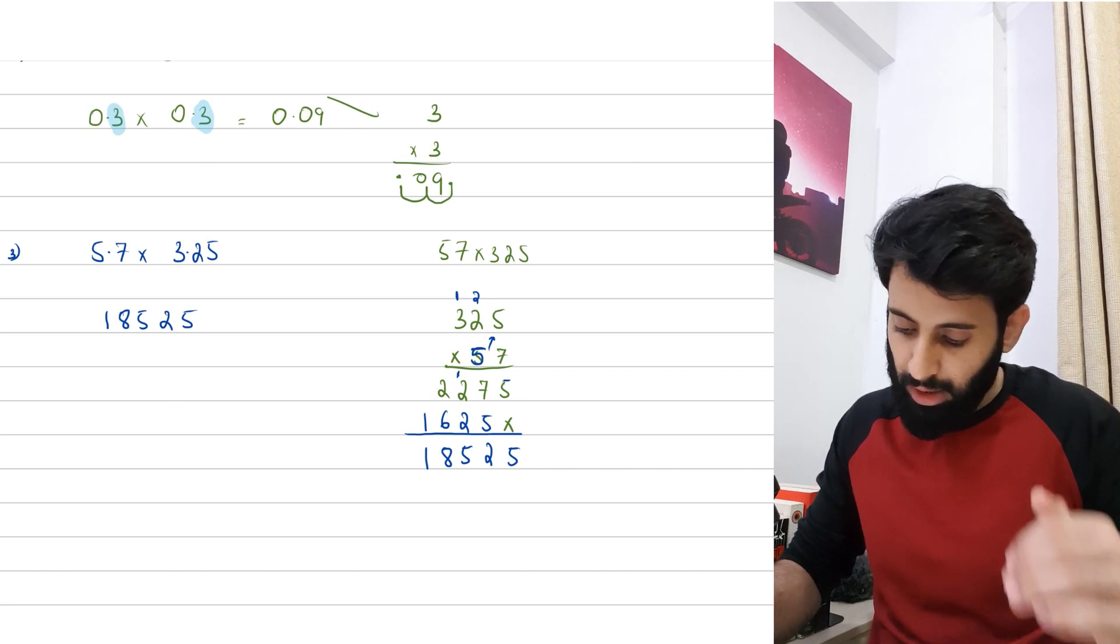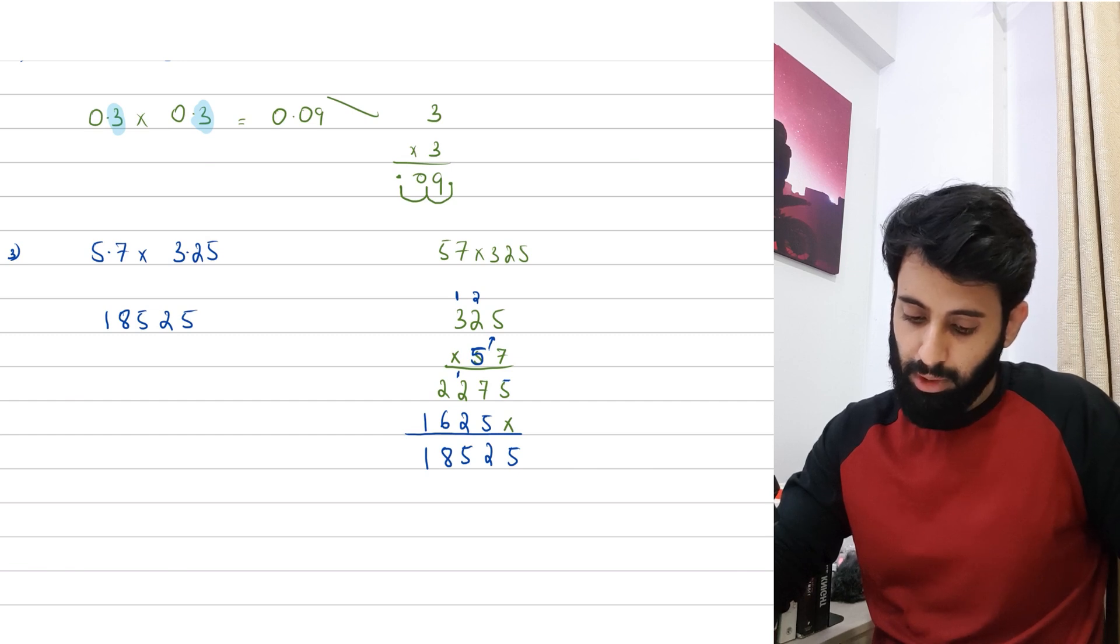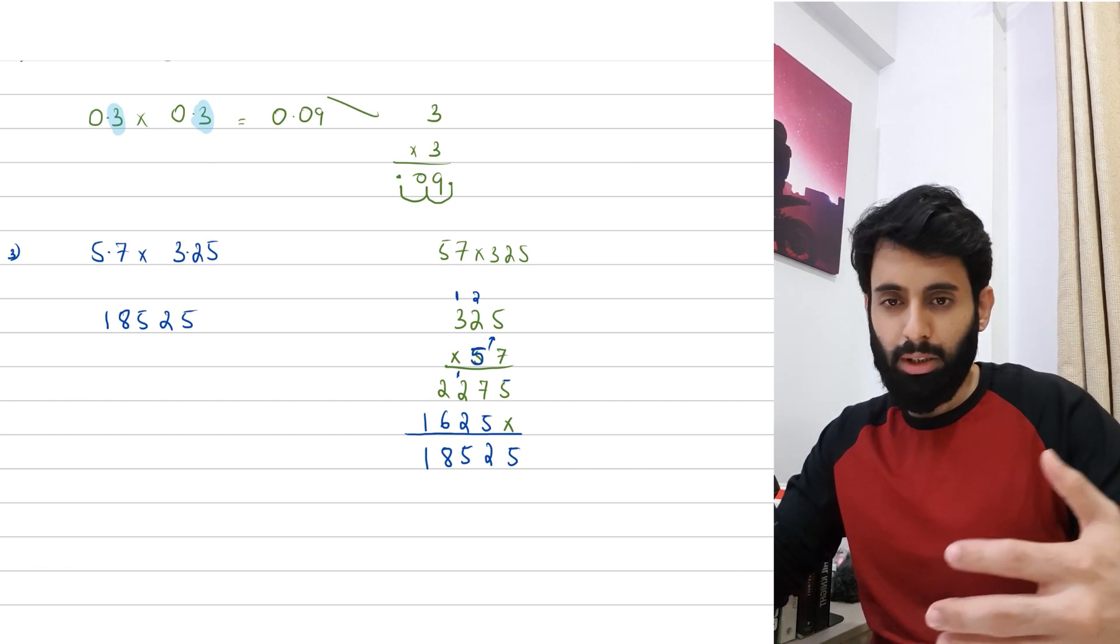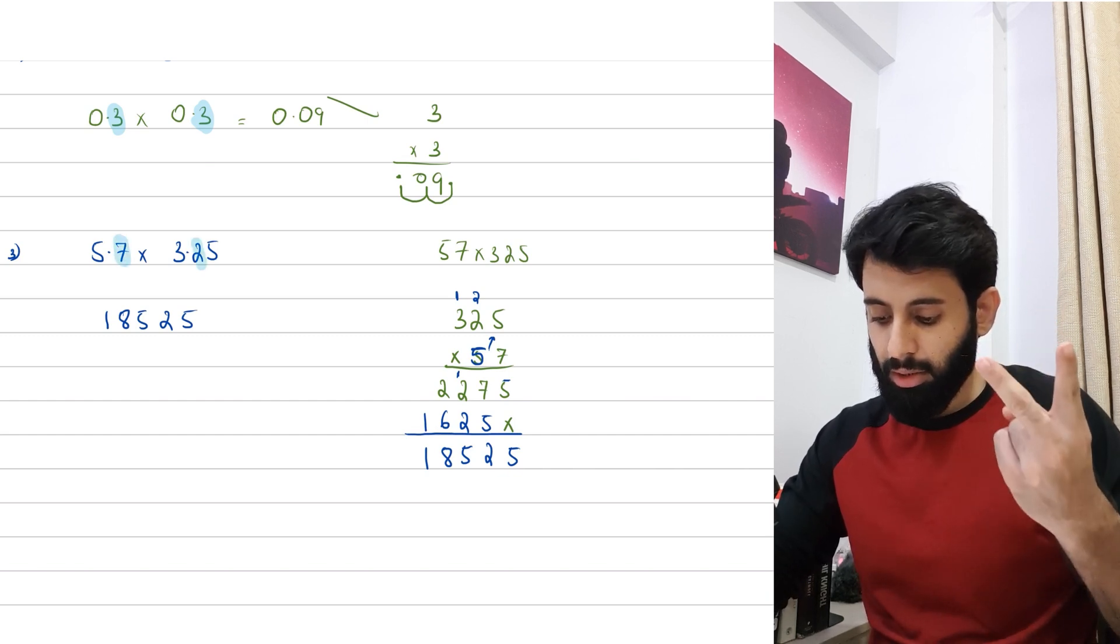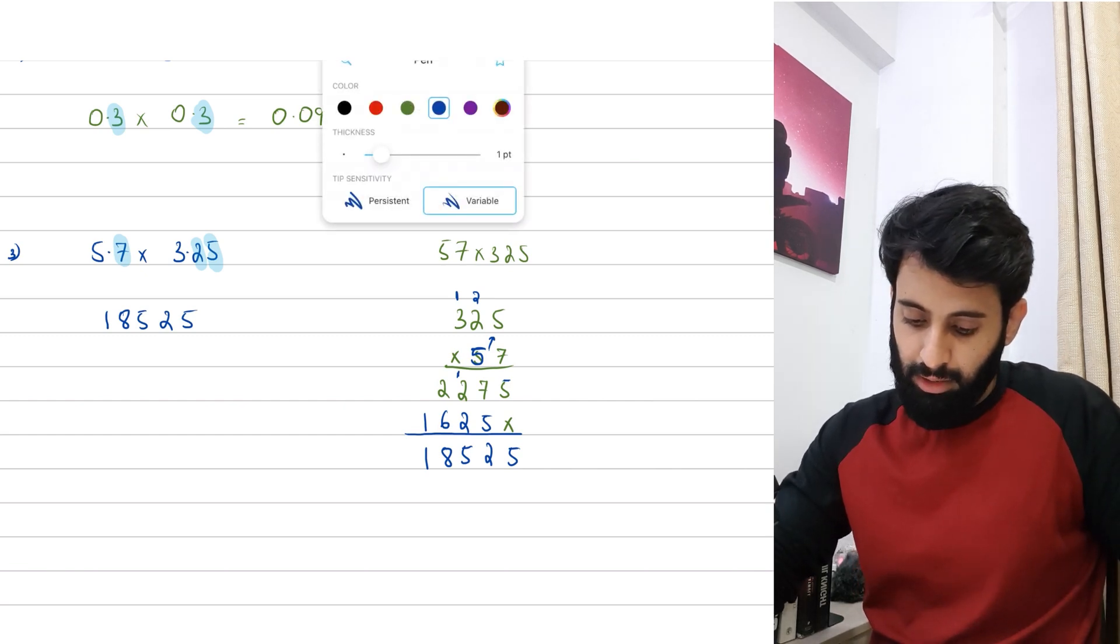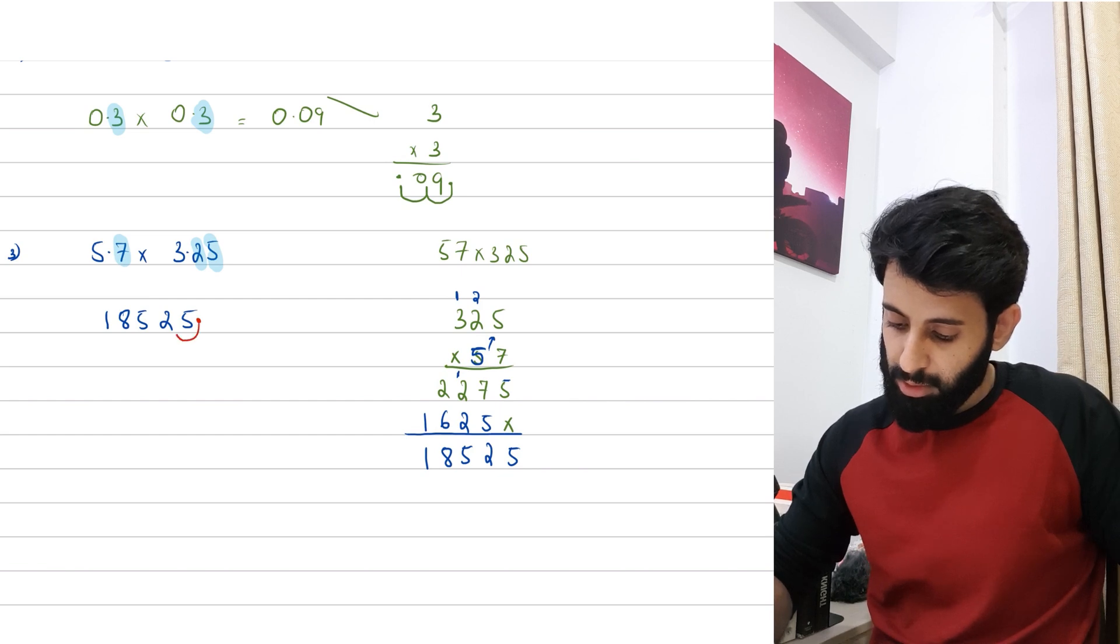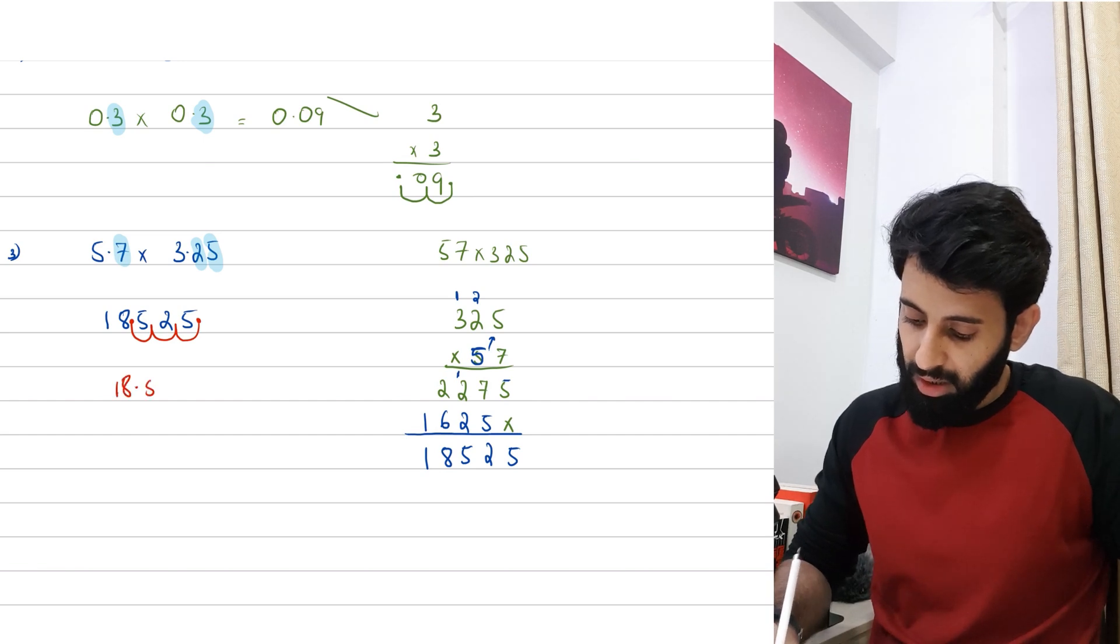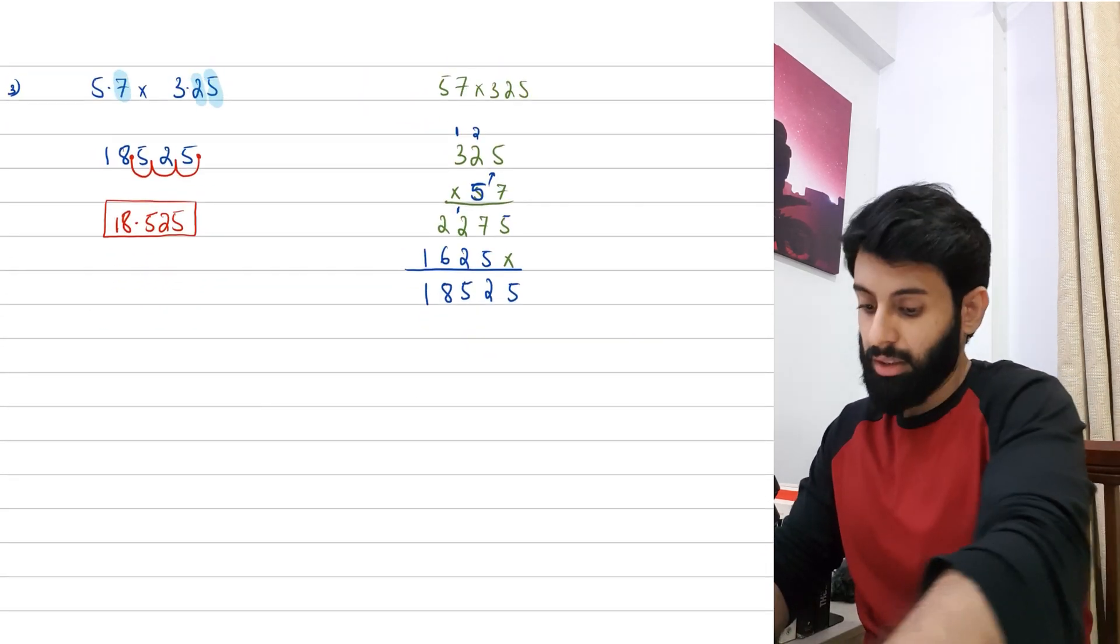Now I'm going to write this entire number over here as it is for the time being: 18525. Now this is the point where I decide where I need to place the decimal. I'm going to count the total number of decimal places we have. So 5.7 - that's 1, 3.25 - that's 3. So we have a total of 3 decimal places. Right now this is where the decimal is and I'm going to bring the decimal 3 places backwards, so 1, 2, and 3. So I'm looking at 18.525 and this is what my final answer looks like.